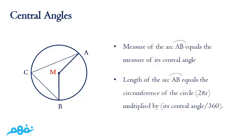There are two types of angles related to the arcs: the central angle and the inscribed angle. The central angle is an angle where its terminal sides are on the two endpoints of the arc. For example, here the central angle AMP, its two terminals A and P are the two endpoints of the arc AB.